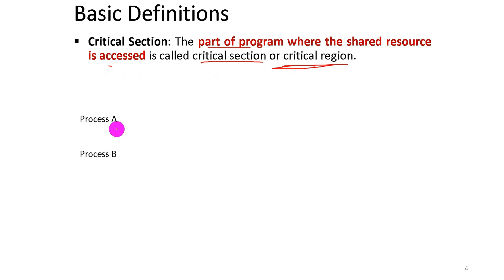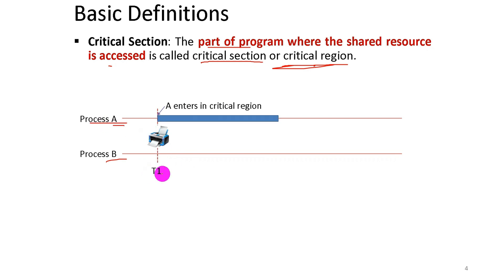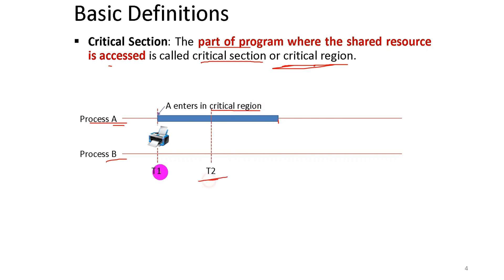For instance, there are two processes: Process A and Process B. There is a printer — Process A wants to print a file and Process B wants to print a file. At time T1, Process A starts printing. It enters the critical region, and the scheduler executes and prints.